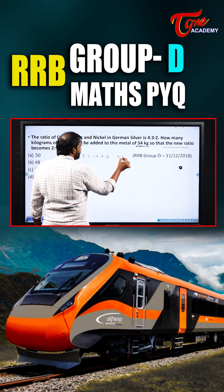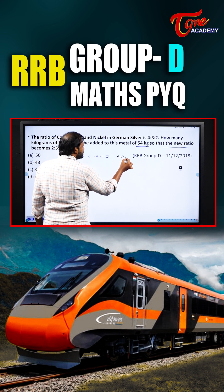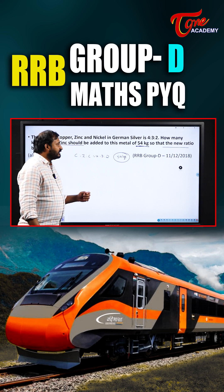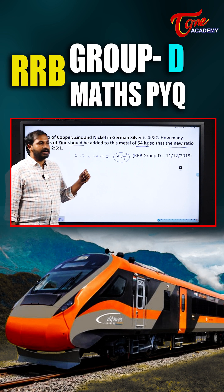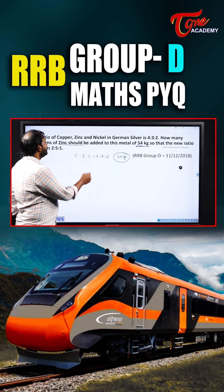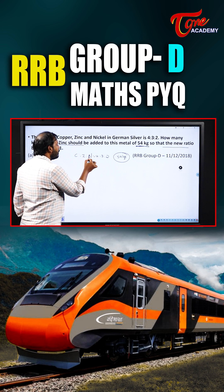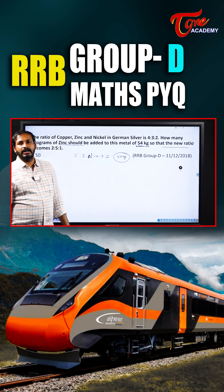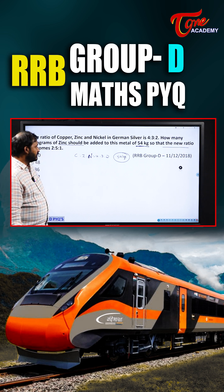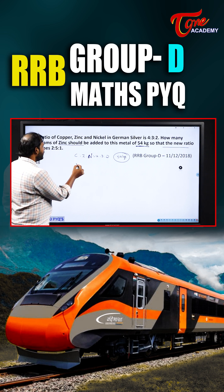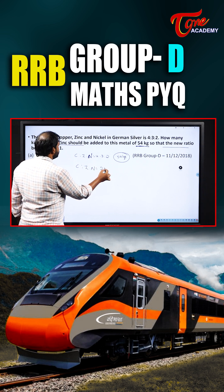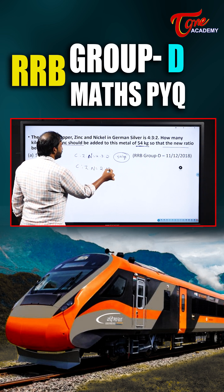This is very simple. In this 54 kg, only one thing will vary — before and after, what varies is the zinc proportion. But what about the copper and nickel? Both copper and nickel are unchanged. So after adding zinc, the new ratio of copper, zinc, and nickel should become 2:5:1.